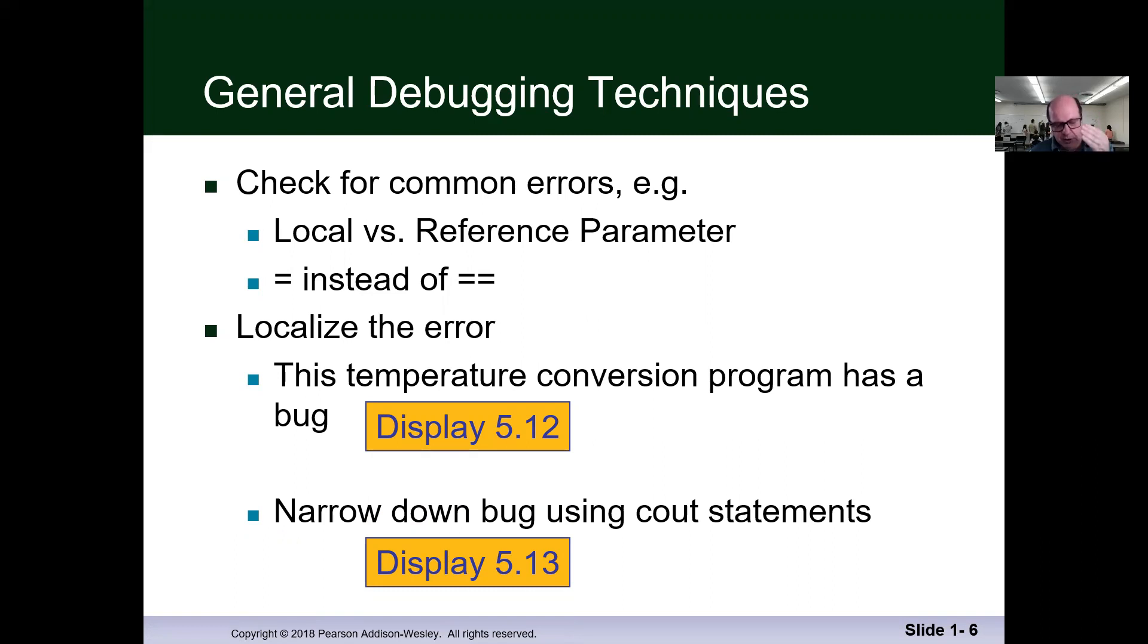Another one is the integer divided by integer. That is another common mistake that we do. So we have one over three, and we're expecting 33 percent, but we get zero. So those are some of the things that come with experience. And you just can make a list of it and try it out first.